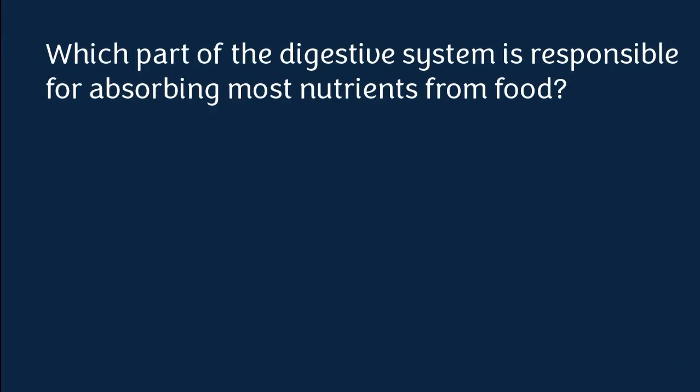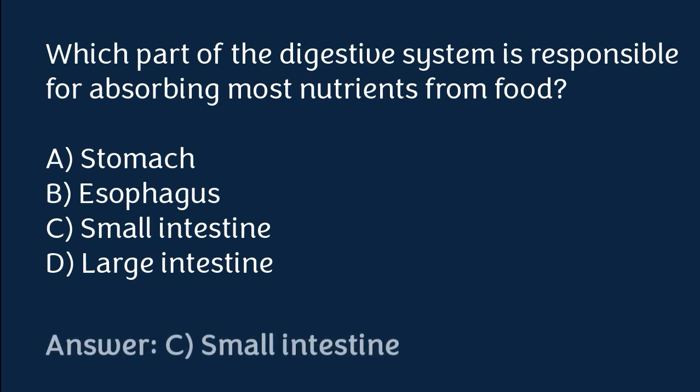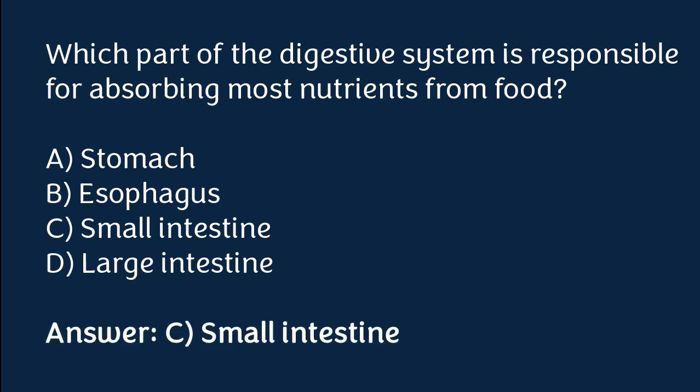Which part of the digestive system is responsible for absorbing most nutrients from food? Stomach, esophagus, small intestine, or large intestine. The correct answer is option C. The small intestine is the part of the digestive system responsible for absorbing most nutrients from food.